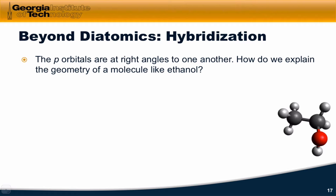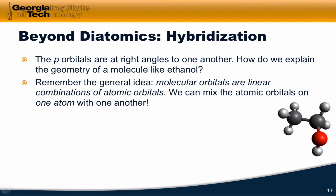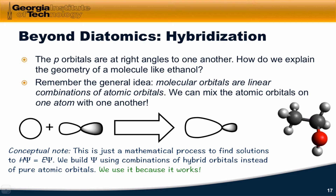How can we explain the geometry of a molecule like ethanol given molecular orbital theory? Do we need to throw MO theory away and start over? As it turns out, we can adapt molecular orbital theory to account for these seemingly strange geometries. Remember the general idea that molecular orbitals are linear combinations of the atomic orbitals. What we can do is mix the P orbitals on a single atom together to produce customized bond angles.